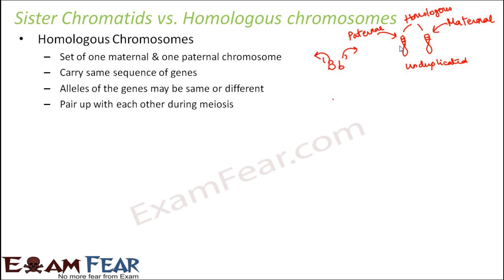Homologous chromosomes pair up with each other during meiosis. There is some sort of recombination between homologous chromosomes, which is why a child sometimes has features similar to the father, some similar to the mother, and some that are a mix of both — or even features not present in either parent. Those new features arise due to the pairing and crossing over of homologous chromosomes during meiosis.